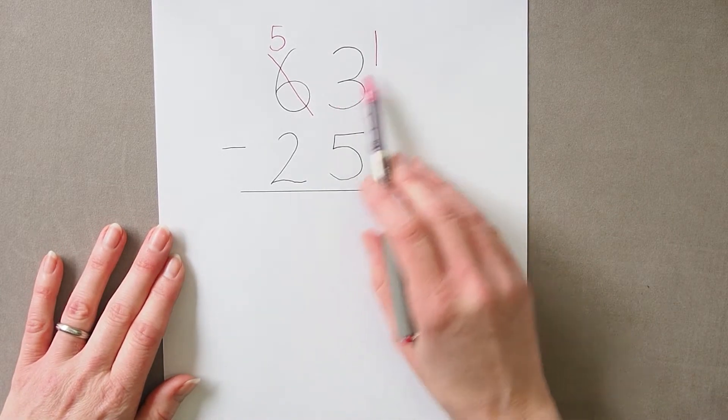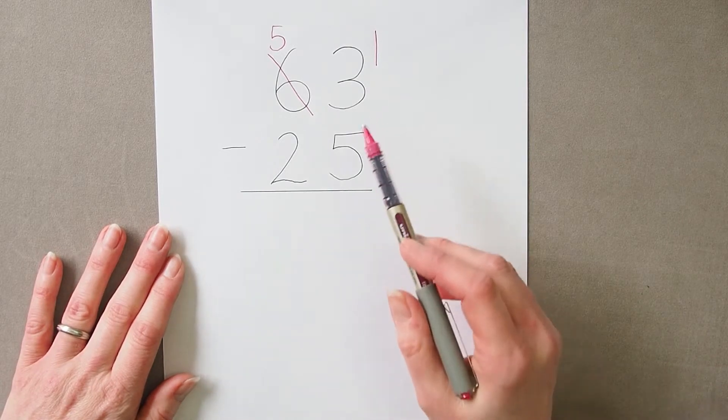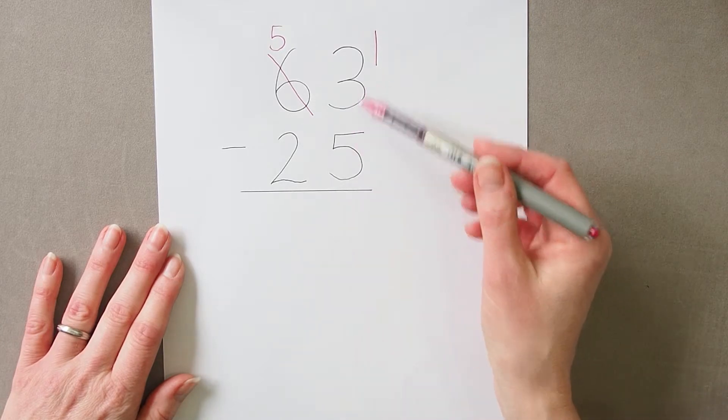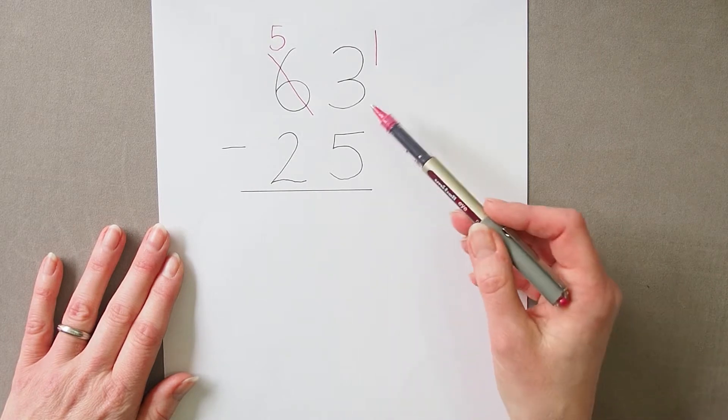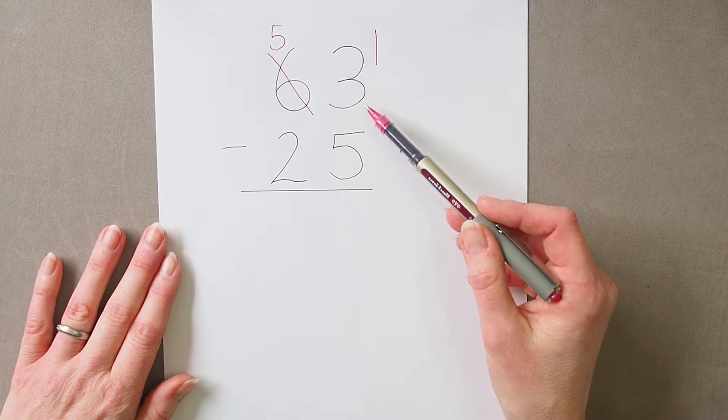So effectively it looks like 31. Some pupils might actually read this as 13 and go on to do 13 take away 5 is 8 and get the right answer, but that's a pointer to the fact they may not be entirely secure with teen numbers.